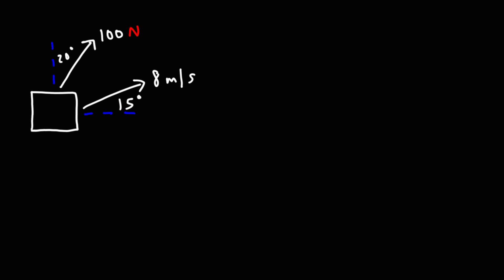Consider this problem. We have a block that is moving at a velocity of 8 meters per second at an angle of 15 degrees above the horizontal. At the same time, we're applying a force of 100 newtons at an angle of 20 degrees with respect to the vertical, as shown on the screen. What is the instantaneous rate at which the force is transferring energy to this block? In other words, what is the instantaneous power exerted by the force on this block at that speed?